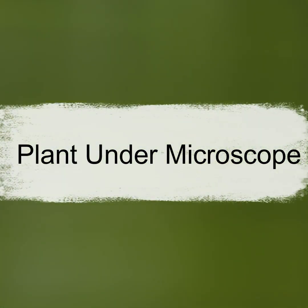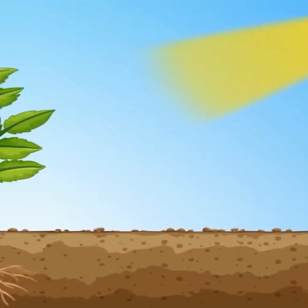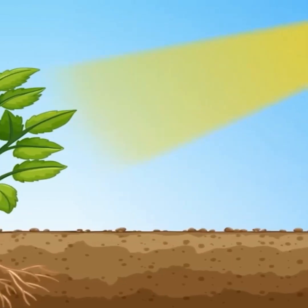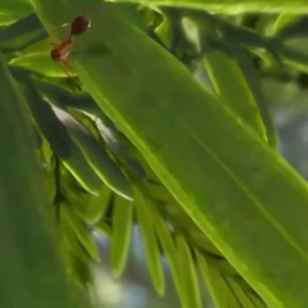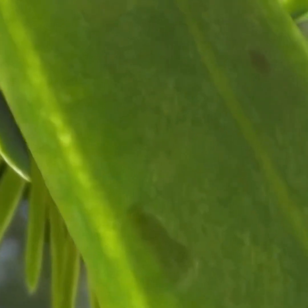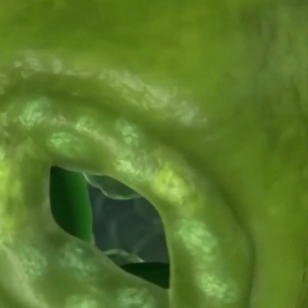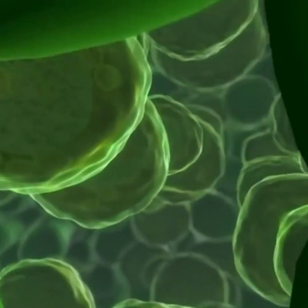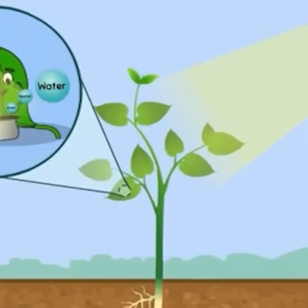Plant under microscope. You must have learned in school that plants use sunlight to produce food. But how? When we observe the leaves of plants under a microscope, we can clearly see small holes on the surface of these leaves. These holes allow sunlight to enter the plant, which provides energy to cook food.